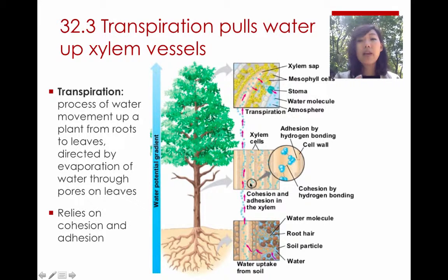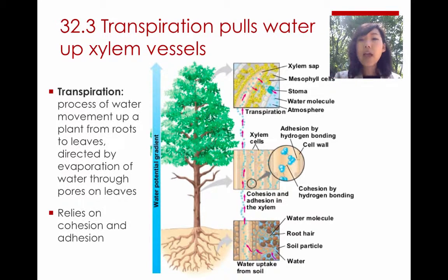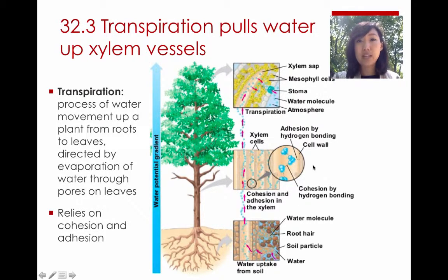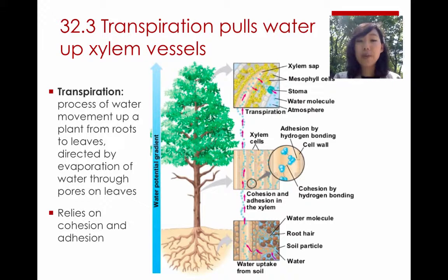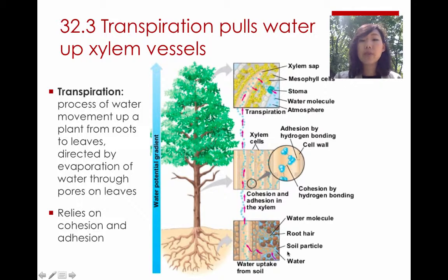Cohesion is the tendency of water to stick to itself, and adhesion is the tendency of water to stick to other surfaces like the cell wall. There's a long chain of hydrogen bonds — cohesion where water sticks to each other, and adhesion where it sticks to the cell walls — that helps water create a chain moving up to replenish what's lost through evaporation. Ultimately, this process all the way down to the roots is one of the reasons why water is so readily absorbed by the root system.